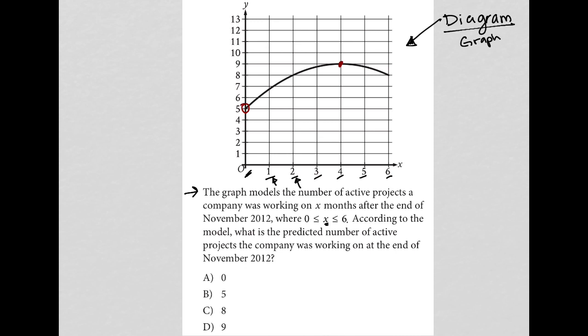And we've already noted that, which is so interesting. I usually look for intercepts, and they end up, a lot of times, being very important. So that intercept is at 5. So that means the number of projects at the end of November 2012 was 5, and therefore the answer to our question here is choice B. So that's what we're going to do.